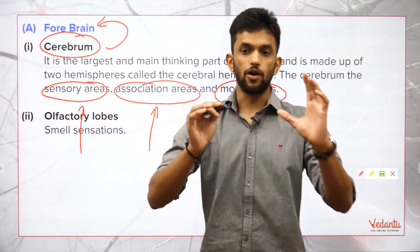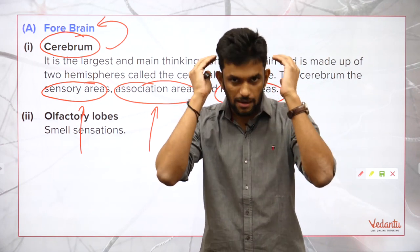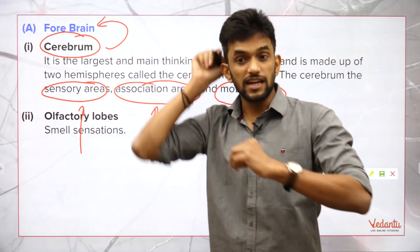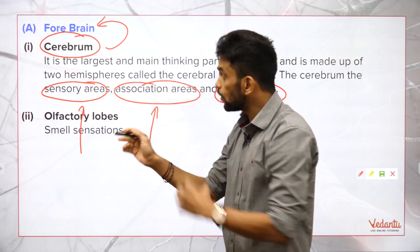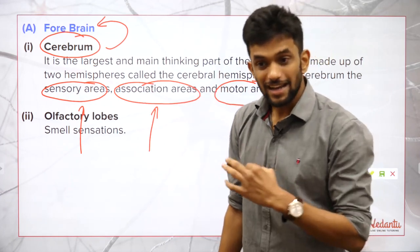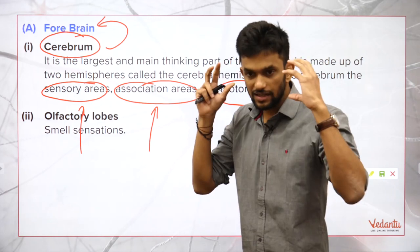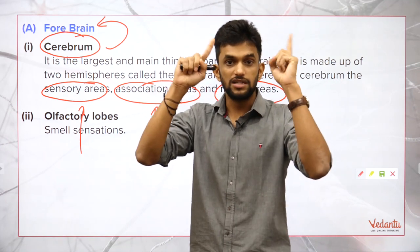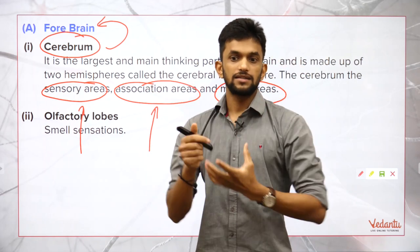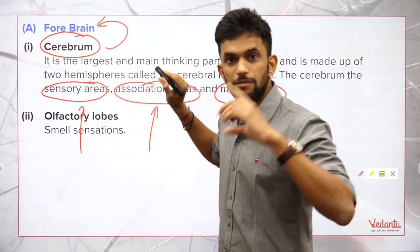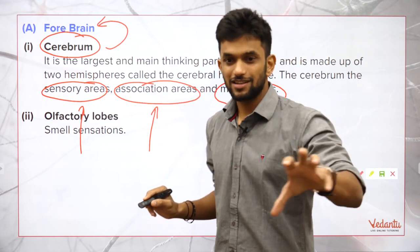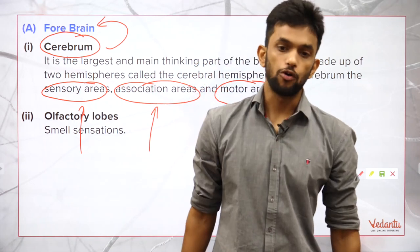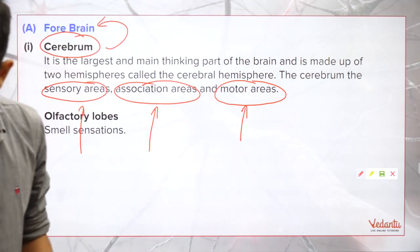The motor area is like the output of my body — the part of the brain that makes me talk, move my hand, or write. So the motor region of the cerebrum handles output. The association area is where the brain relates and processes information — it connects the input with what you know about it. Simply put: sensory area = input, association area = processing, motor area = output.